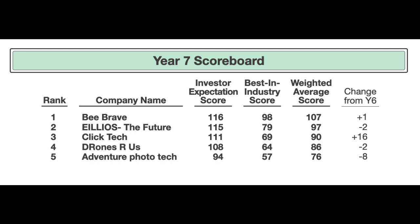Team B is leading the charge at 107. The difference between the 106 on the other standings and 107 here is due to the top 100 closing around 6 p.m. versus our midnight close. Team E is at 97 — same as year six, they were first and second. Team C gained 16 points and is now at 90, where in year six they were dead last — hard work pays off. Team B and E, don't discount Team C because they're on the move. Team D dropped two points but is at 86, a respectable score. Team A is at 76, which concerns me — at this point I'm looking for teams to have an 85 or higher.